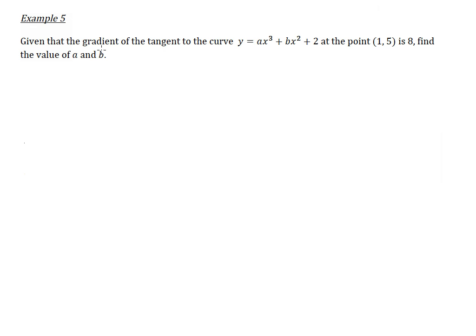Now, given that the gradient of the tangent to the curve at the point is 8. Sounds like a mouthful, but let's try to analyze it bit by bit. Given that the gradient, the gradient of the tangent to the curve. So, the gradient of the tangent is actually the gradient of the curve at this particular point. So, this is the point, and this is the gradient value.